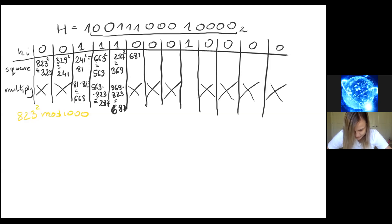So we have 487 squared, which is 169. Then 169 times 823, this is congruent to 587.